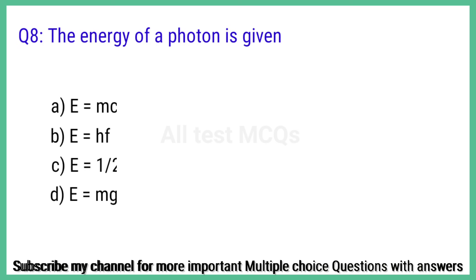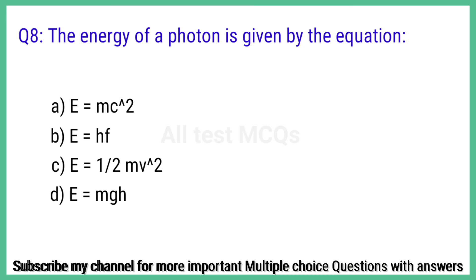Question number 8. The energy of a photon is given by the equation? The correct answer is option B: E equals HF.